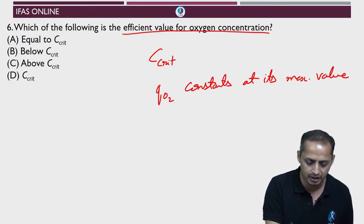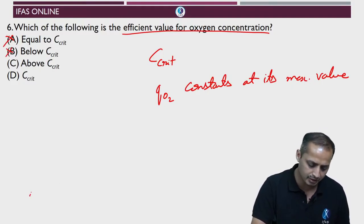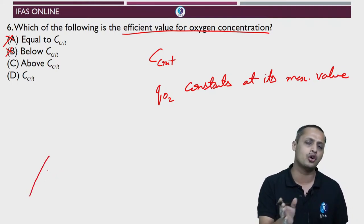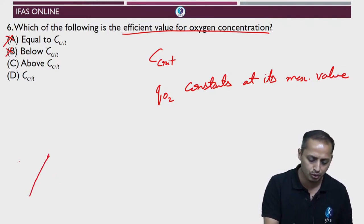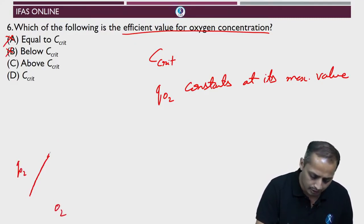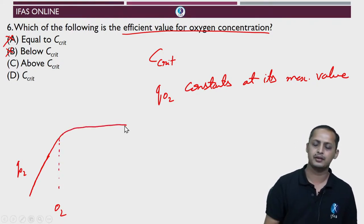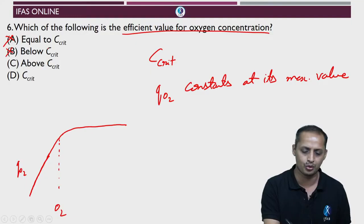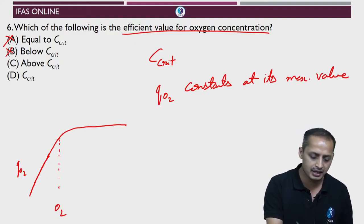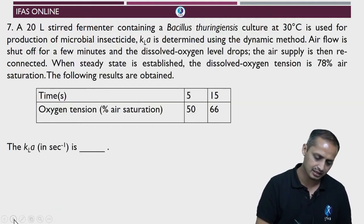The efficient value of oxygen concentration is above C_critical. Below C_critical there is a linear relationship between QO2 and O2 concentration. Once it reaches and surpasses C_critical, QO2 levels off at its maximum — so it cannot be equal to C_critical or below it. The answer is option C: above C_critical.